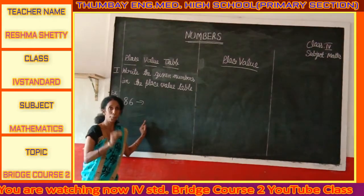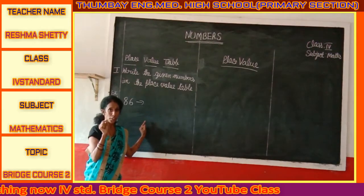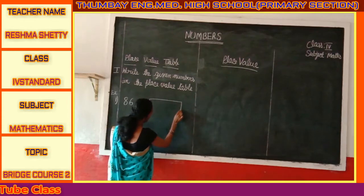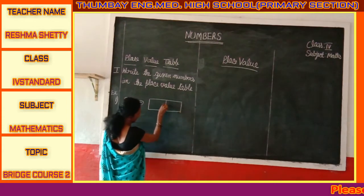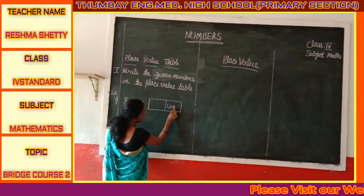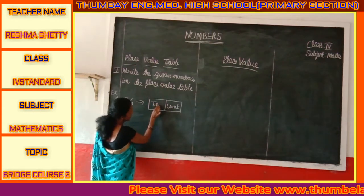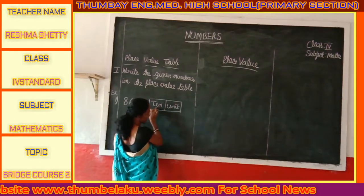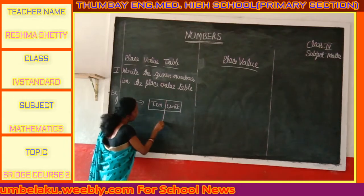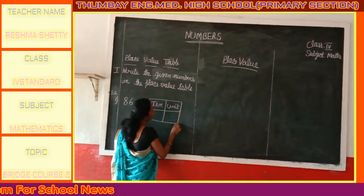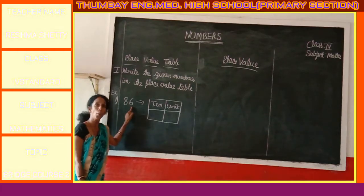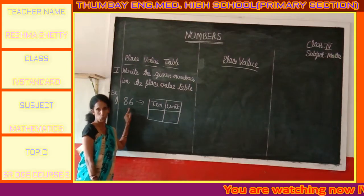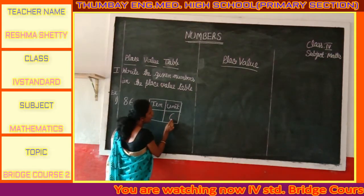What is place, children? Place is the position of a digit in the given number. Let us draw the table. In the place value table, we have unit place and tens place. Let us write the number according to the place. In 86, how many units are there? We have 6 units, so 6 is written in the unit place.